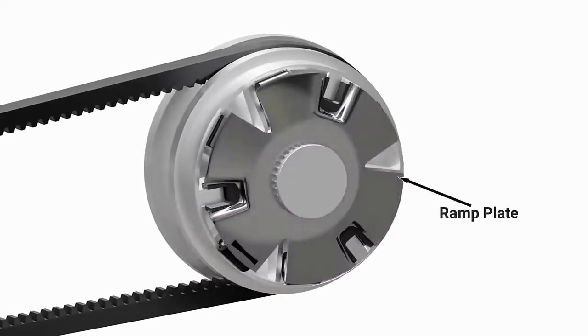These rollers push against the ramp plate. Since the ramp plate is fixed, the sliding conical plate is forced towards the other plate.